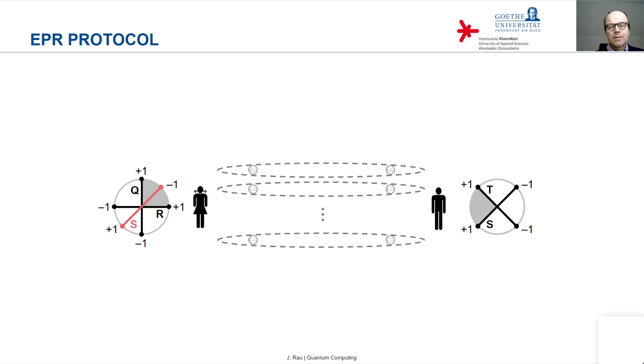And Bob is also allowed to measure Q, which is the same observable that Alice measures.